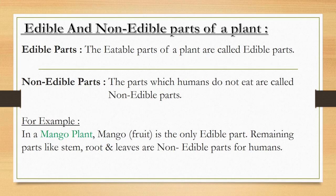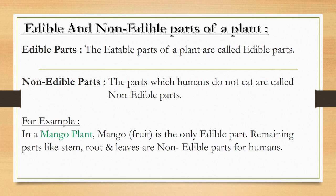Some of you may wonder: do all plants have just one edible part? Obviously no. Some plants have more than one edible part which can be eaten as food. Like in a mustard plant, the edible parts are its leaves and seeds, which are used to extract oil that is used in cooking.